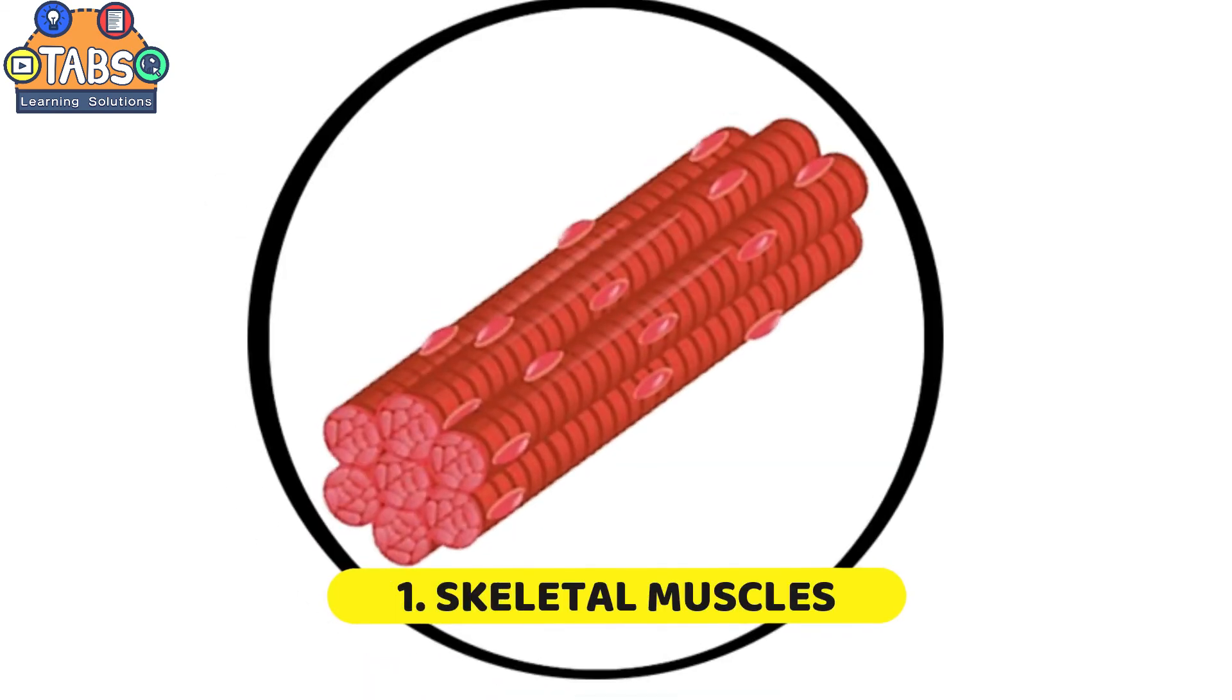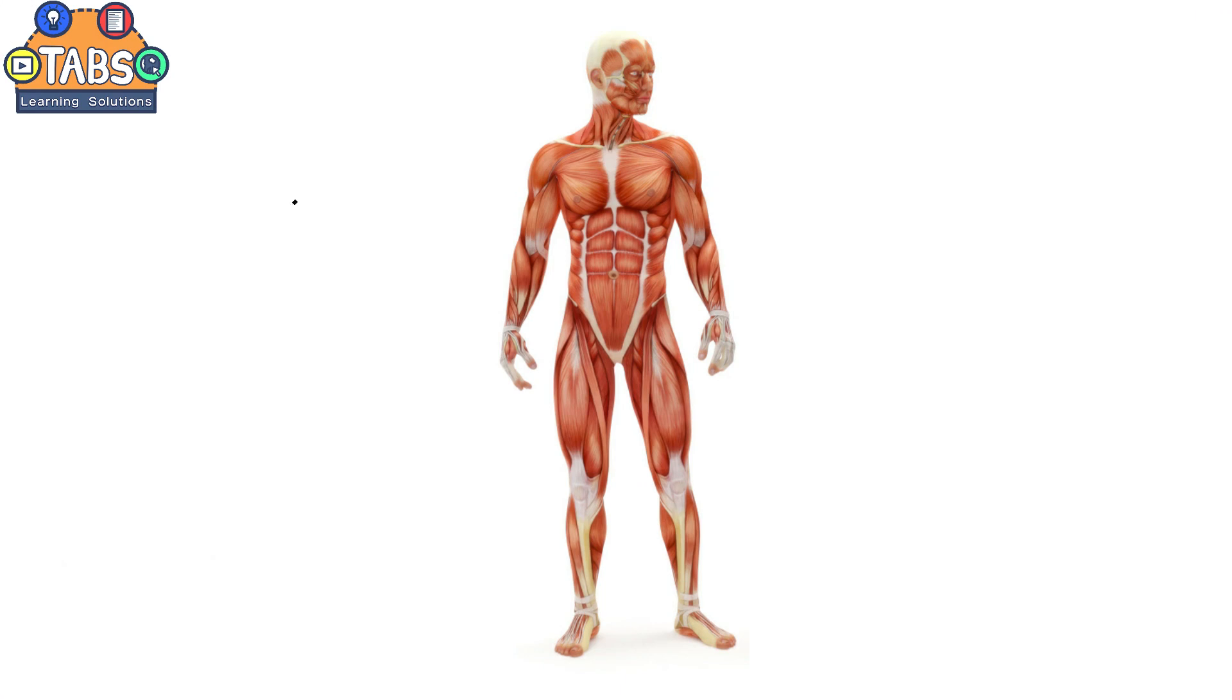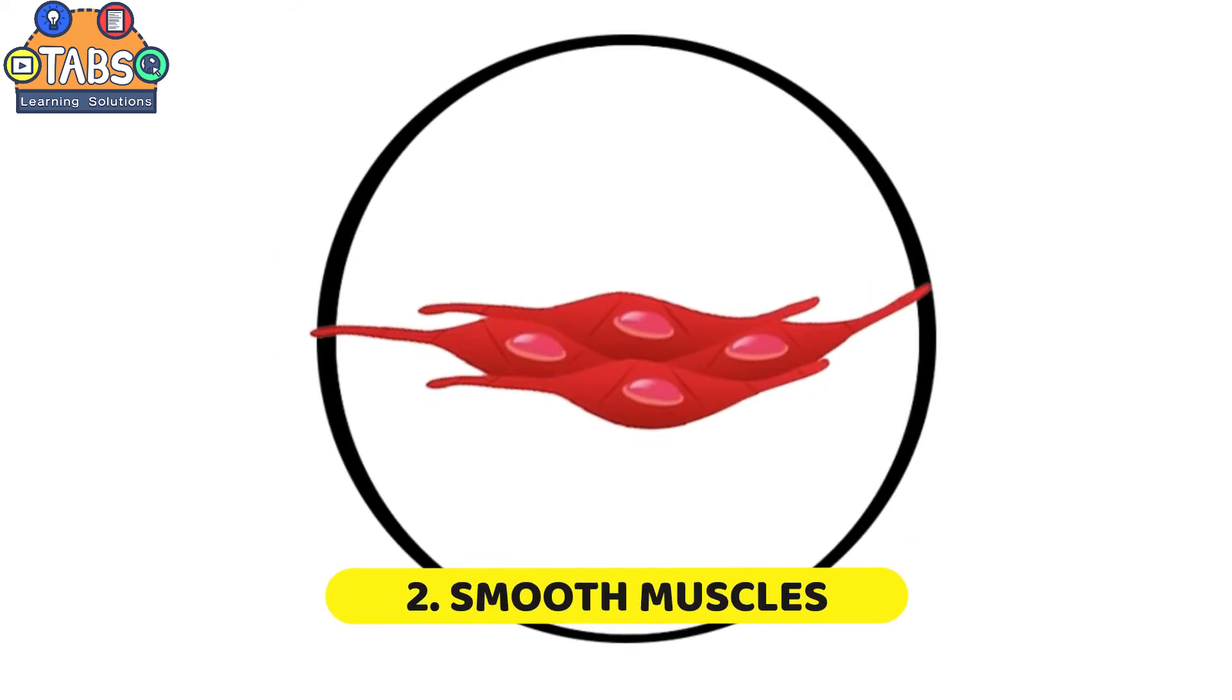There are three types of muscle tissue. Skeletal muscles are found in the arms, legs, chest, neck, and face.